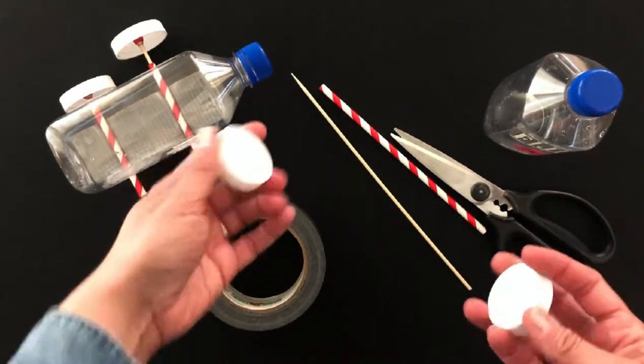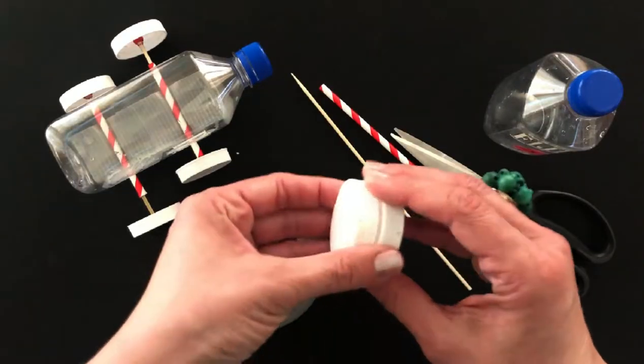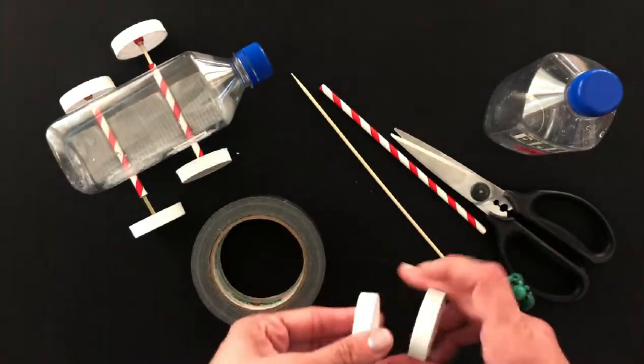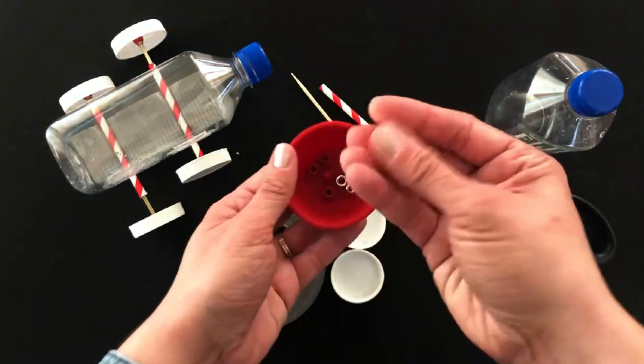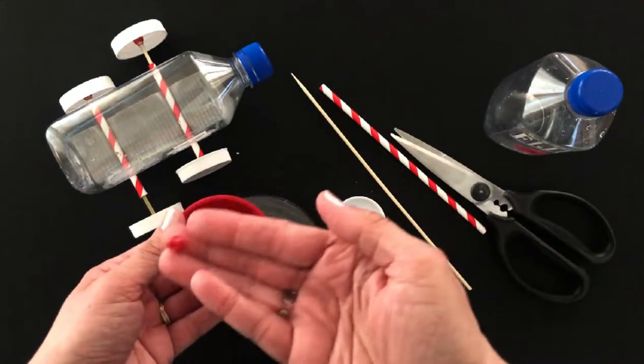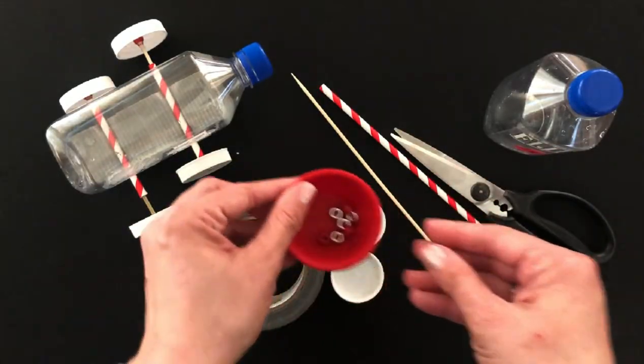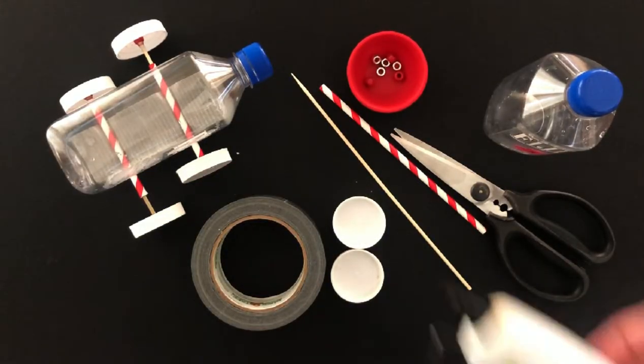Be sure to grab four that are the same size because these are going to be your wheels. You need four pony beads and these are going to help you build your axle. And the last thing that you need is a glue gun.